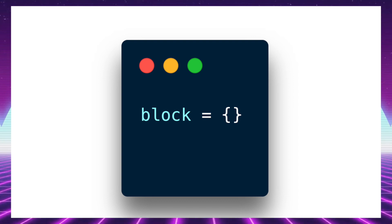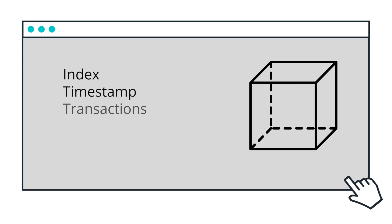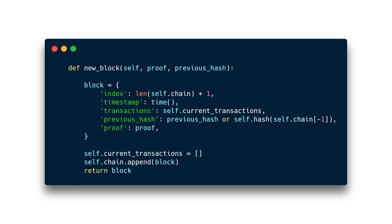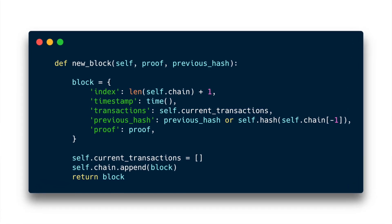So what goes inside a block? Well, essentially five things, three of which are easy: the index number of the block, a timestamp, and a list of transactions — like who sent who how many coins of our currency. The other two pieces are a little more complicated, so we'll come back to them in just a moment, but for now let's get them in our block for the sake of completeness. They are the hash of the previous block and the proof. These tiny lines of code are the framework of the actual blocks that will house the records of our own cryptocurrency.